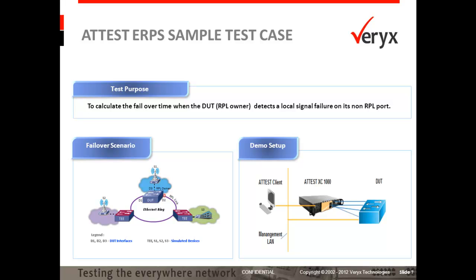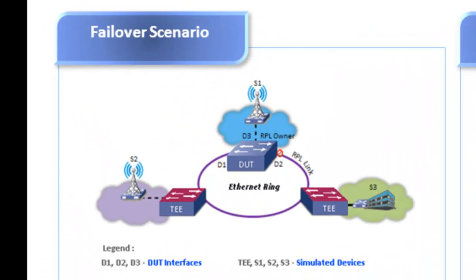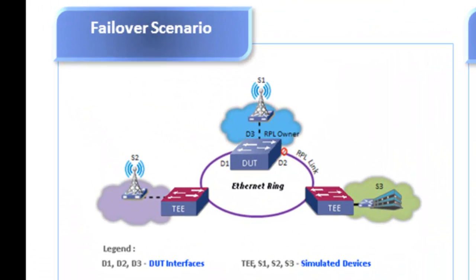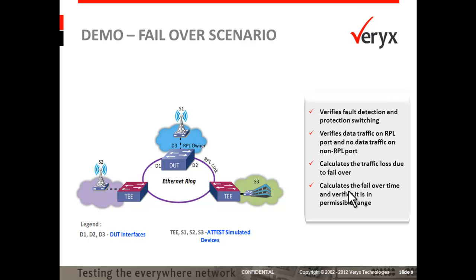An illustrative explanation of this failover behavior is seen here. In this scenario, the device under test is configured to be the RPL owner. ADDIST ERPS sends periodic CCM messages to enable steady state, and the ring protection link is blocked under normal conditions.